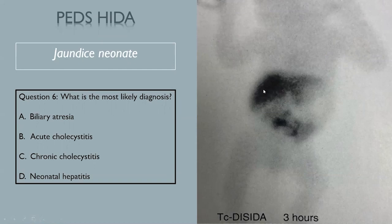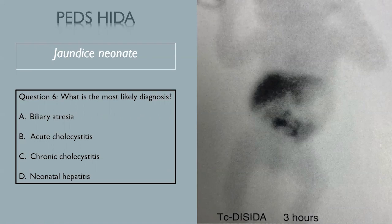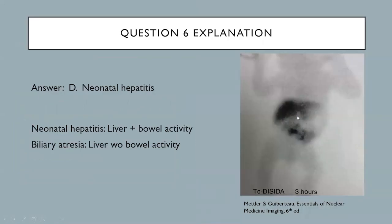Moving on to pediatric hepatobiliary studies, these are usually done in jaundiced neonates to differentiate between biliary atresia versus neonatal hepatitis. In this case, radiotracer activity is seen in the liver with progression into the small bowel — this is neonatal hepatitis. When you see liver activity and bowel activity, that means activity progressed from the liver into the biliary ducts and into the small bowel, so that cannot be biliary atresia. Liver activity plus bowel activity equals neonatal hepatitis; biliary atresia shows liver activity without bowel activity.